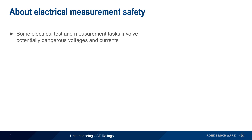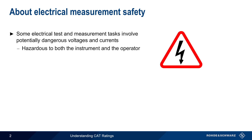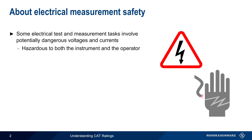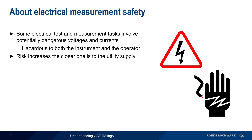Some electrical tests and measurement tasks involve potentially dangerous voltages and currents. Dangerous refers both to the risk of damage to the instrument, as well as the risk of operator injury or even death. This risk increases the closer one gets to the voltage source or utility supply. Shorter distances mean lower impedance between the measurement point and the voltage source, and hence the potential for higher currents.